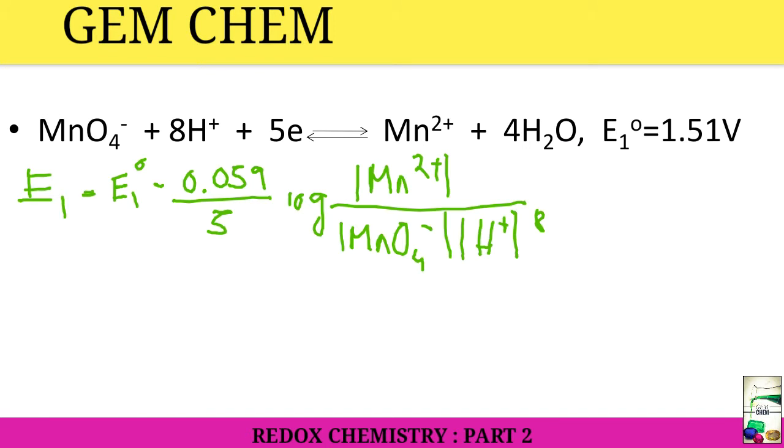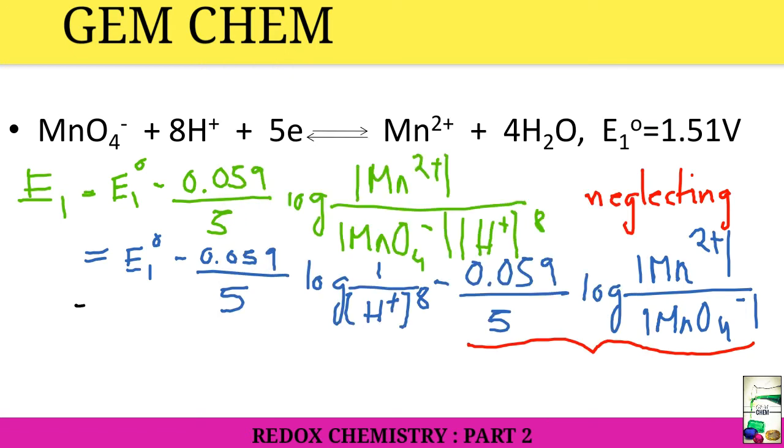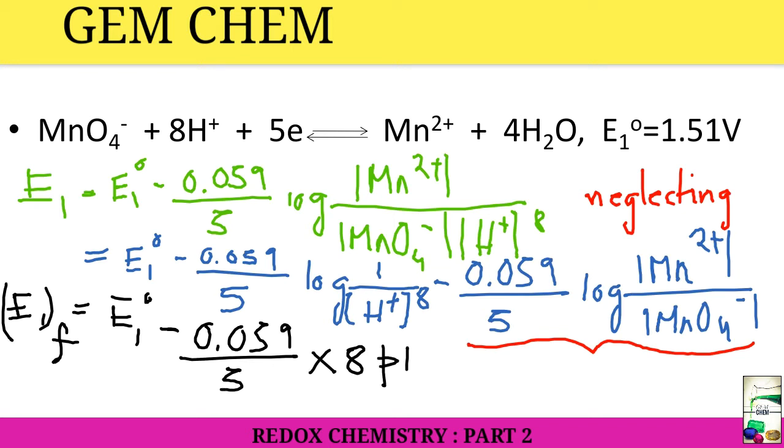So next, it can also be written as E₁⁰ minus 0.059 by 5 log 1/[H⁺]⁸ minus 0.059 divided by 5 log [Mn²⁺]/[MnO4⁻]. Now this part can be neglected. On neglecting, the final thing we get is E₁ and the new potential is E^F, that is formal reduction potential: E₁⁰ minus 0.059 by 5 into 8 pH. This is a result of pH effect. So this is the formal reduction potential.